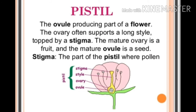A pistil has three parts: stigma, style, and ovary. Stigma is the disc-like part present at the top of the pistil. Style is the connecting link between the ovary and the stigma. Ovary is the basal swollen part, and inside the ovary, ovules are present. When the ovary gets ripened, it converts into fruit, and the ovules on maturity convert into seed.